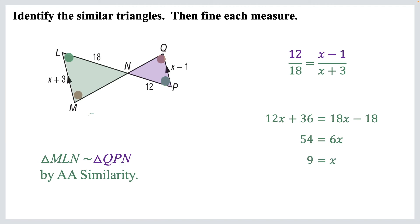Are we done? Hmm. We need to find each measure, don't we? Okay, so LM, we've got X plus 3, that's 9 plus 3, that equals 12. And then the other one, 9 minus 1 is 8. Now we're done.